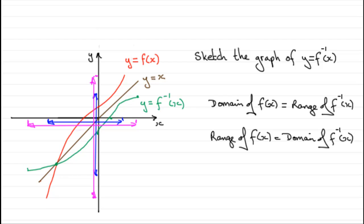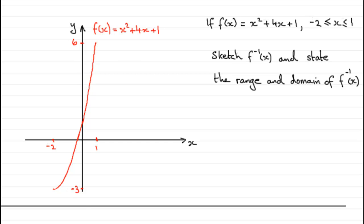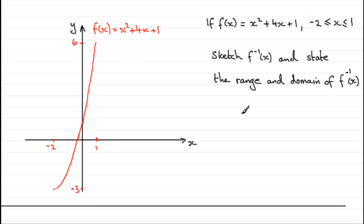Here is the example to try. We have a sketch of f of x equals x squared plus 4x plus 1, with domain x from minus 2 to 1 inclusive, and the range of f of x goes from minus 3 to 6. Sketch the inverse function and state its range and domain. You might like to pause the video, think about it, and come back when ready.